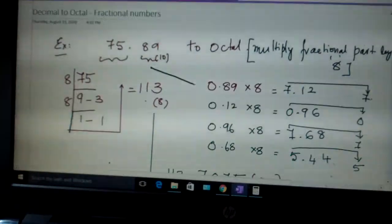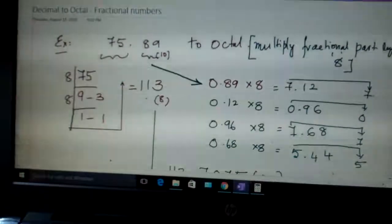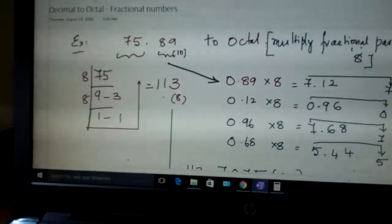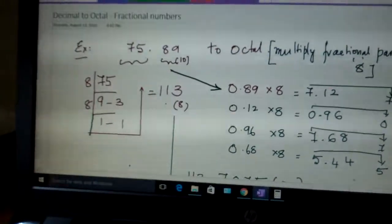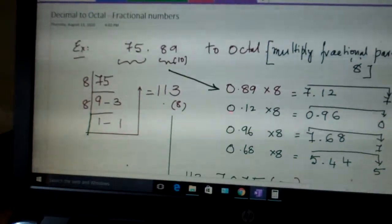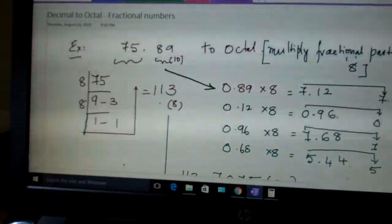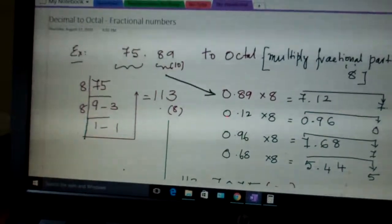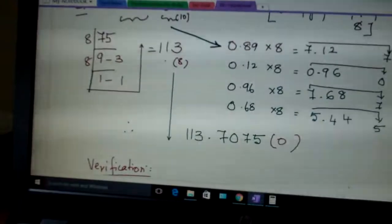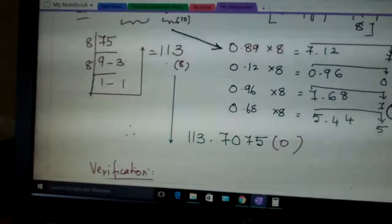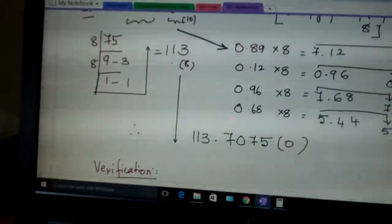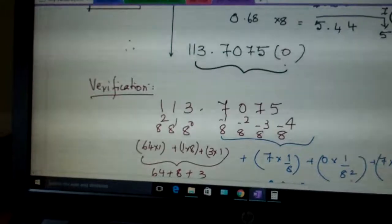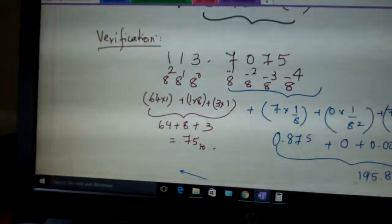And take the fractional part here, multiply it with 8. And what you get is 7.12. So this becomes now the fraction, this becomes the whole number part. Go on writing. Now 0.12 multiplied with 8, you write 0 here. 0.96 multiply again with 8, you get 7.68. Write 7 there. And then 0.68, once again you multiply. This is what you are getting. So write them together.